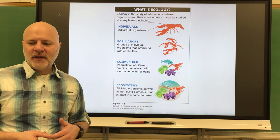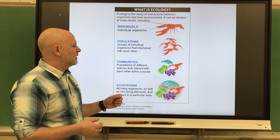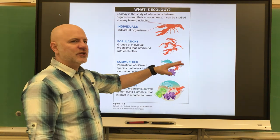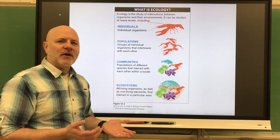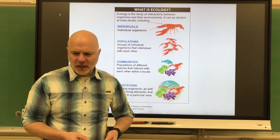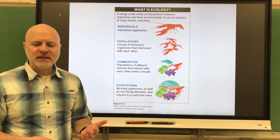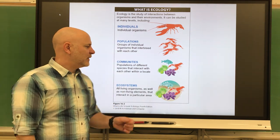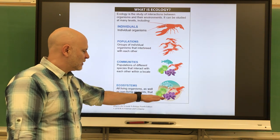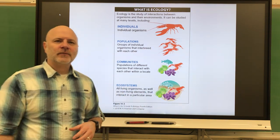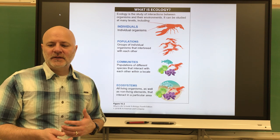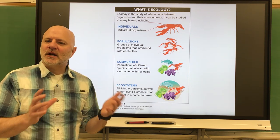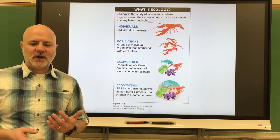Above the population is the community level — all the organisms that live in a certain area, including lobsters, clams, sea anemones, fish, microorganisms, and plants. Above this is the ecosystem level: all the organisms in a given area along with the non-living environment, like the water and sand. Above that is the biosphere level — the parts of the planet where life is possible, essentially the entire globe, comprising all ecosystems together.